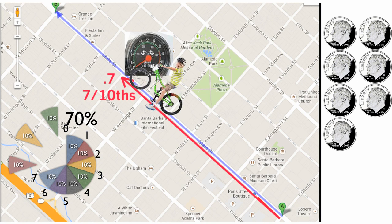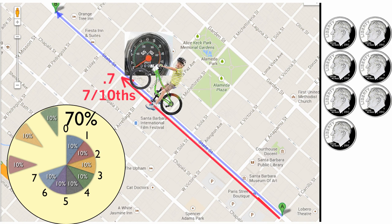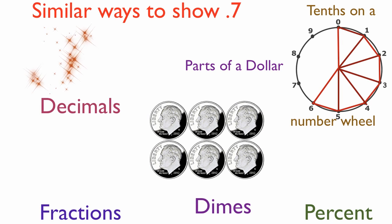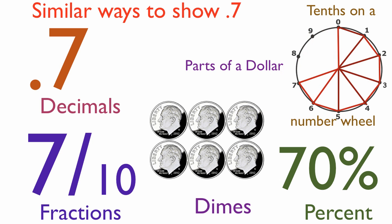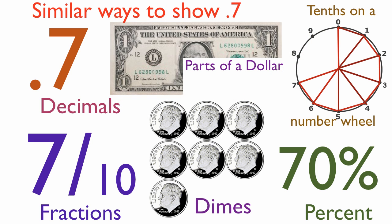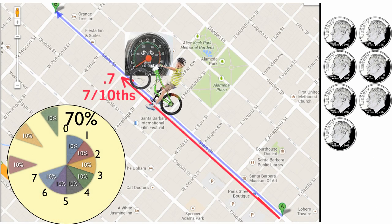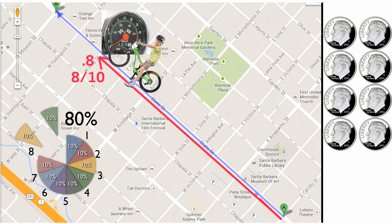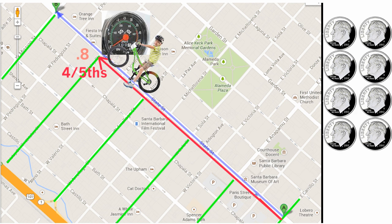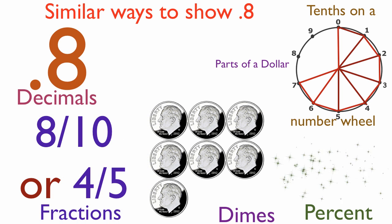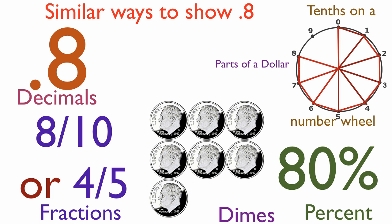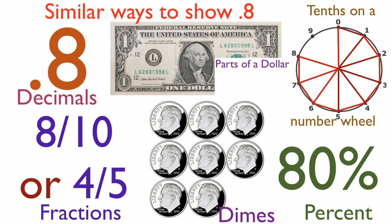Chris goes forward another block to seven and picks up a seventh dime. He's gone 0.7, or seven-tenths, or 70%, or to seven on the number wheel, and now has seven dimes, or seven-tenths or 70% of a dollar. I'll bet you knew most of that. He goes another block and picks up an eighth dime. He now has four of the five two-block chunks. He has now gone 0.8, or eight-tenths, or four-fifths of a mile, or 80% of a mile, or to eight on the number wheel, and now has eight dimes, and is eight-tenths or 80% of a dollar. Is this getting easier?